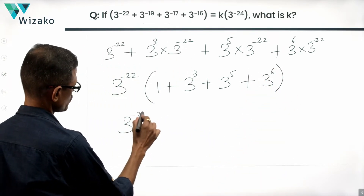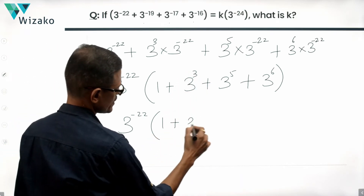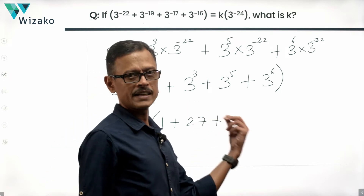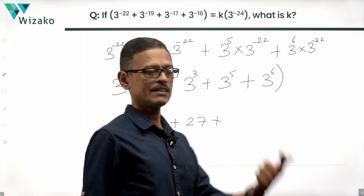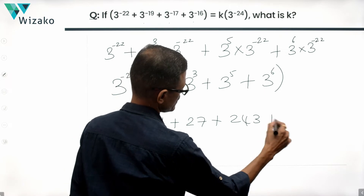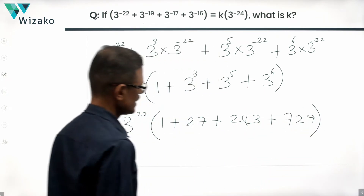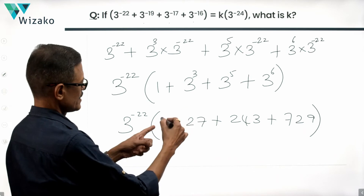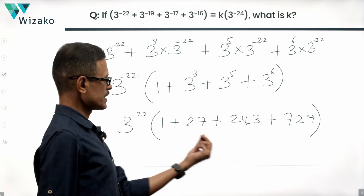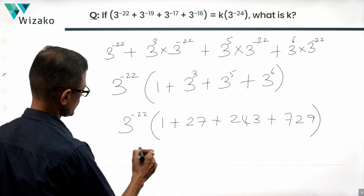This is 3 raised to the power of minus 22 into 1 plus 3 cubed, which is 27, plus 3 raised to the power of 5. 3 cubed is 27, 3 to the power 4 is 81, 3 to the power 5 is 243, and 3 to the power 6 is 729. Adding them up: 1 plus 729 is 730, and 243 plus 27 is 270. So all four numbers add up to 1000.